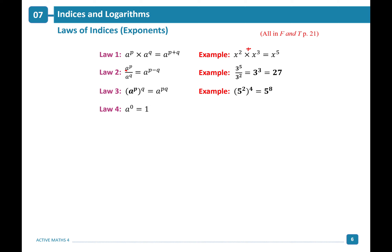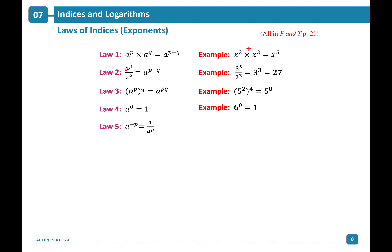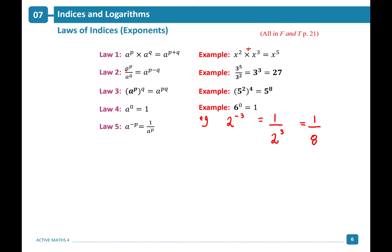Law 4: a to the power of 0 always gives you 1 — anything to the power of 0 equals 1. Law 5: a negative exponent can be written as a positive exponent by making it a fraction. For example, 2 to the power of minus 3 is the same as 1 over 2 to the power of 3, which gives 1 over 8.